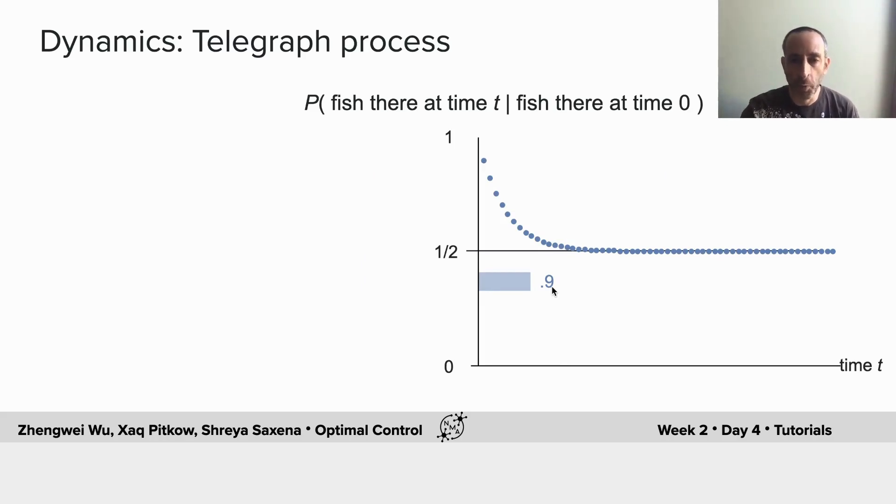So here, if that probability is 0.9, then after about 10 time steps, the fish will have left their initial point and gone back to some random equilibrium distribution. If the probability of staying was 0.95 per time step, then it takes about 20 time steps before the fish randomize.